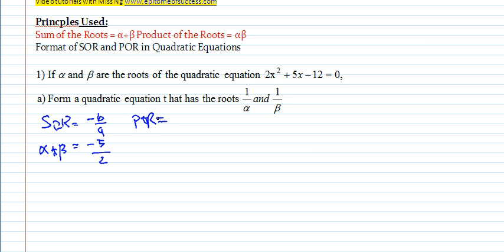The product of the root is given by the formula c over a. The c from the equation is negative 12 and the a is 2, so it's negative 6. Product of the root means alpha times beta. So this is your existing sum of the root and product of the roots.